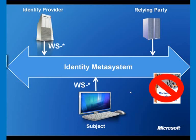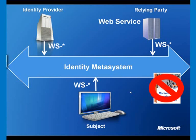When the subject wants to communicate with the identity provider, it will use a subset of the WS-Star protocols — the web services protocols. One in particular, WS-Trust, is used to request tokens and to return security tokens. When the relying party is a web service, the subject and the relying party will also use WS-Protocols to transport the token to and from each other.